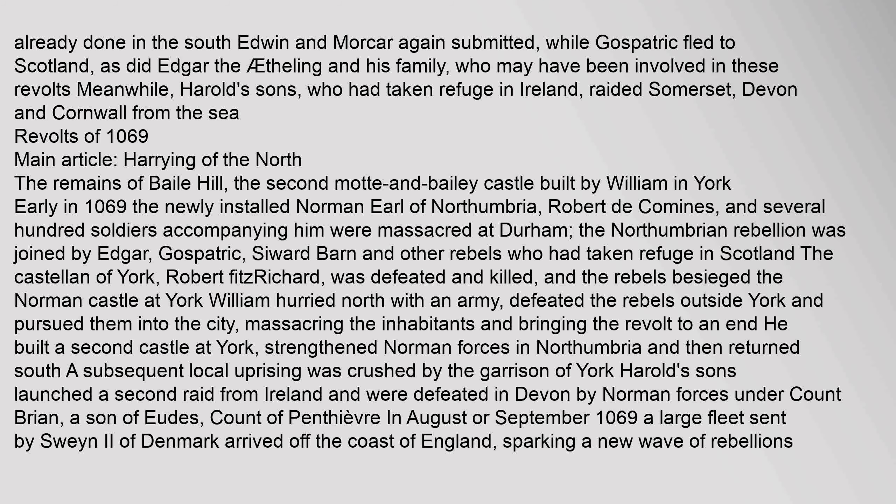Harold's sons, who had taken refuge in Ireland, raided Somerset, Devon and Cornwall from the sea. Early in 1069, the newly installed Norman Earl of Northumbria, Robert de Comines, and several hundred soldiers accompanying him were massacred at Durham. The Northumbrian rebellion was joined by Edgar, Gospatric, and other rebels who had taken refuge in Scotland. The Castellan of York, Robert Fitzrichard, was defeated and killed, and the rebels besieged the Norman castle at York. William hurried north with an army, defeated the rebels outside York, and pursued them into the city, massacring the inhabitants and bringing the revolt to an end. He built a second castle at York, strengthened Norman forces in Northumbria, and then returned south.